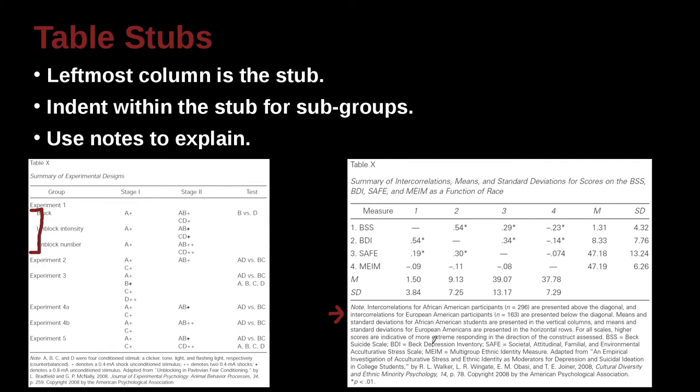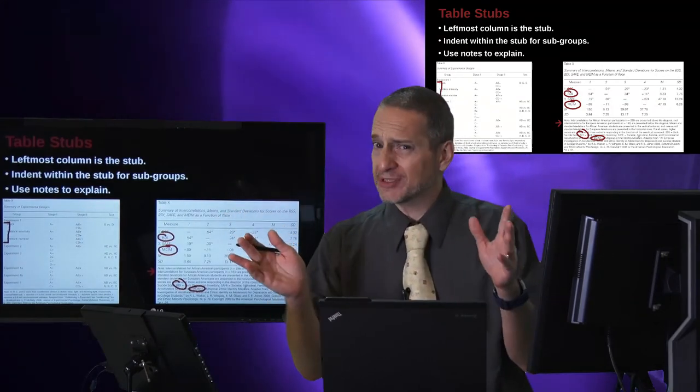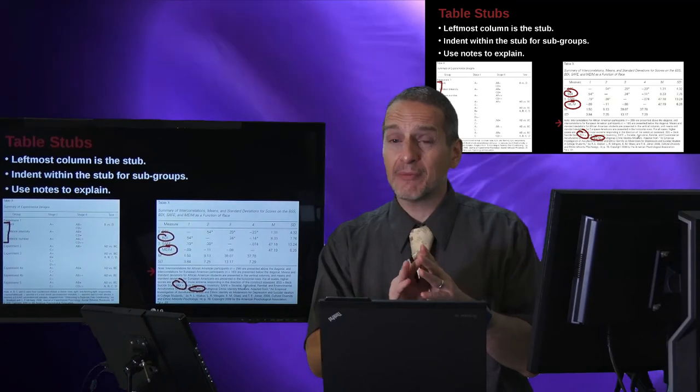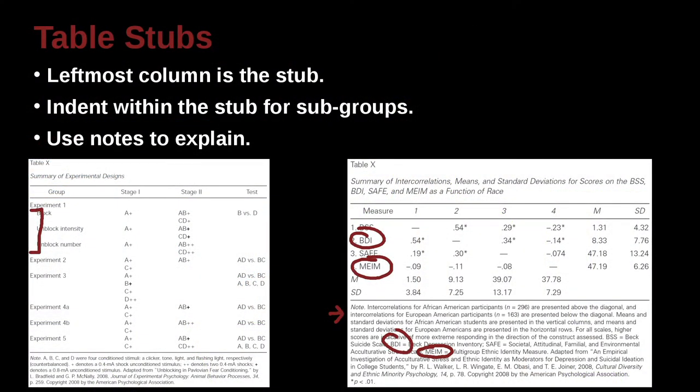One thing that this note is doing is you can see down in here like MEIM, and here is MEIM. And BDI, and here is BDI. So what's this doing? Well, BDI is Beck Depression Inventory. And MEIM is Multi-Group Ethnic Identity Measure. There's really some long, long phrases. So those are way too many words to put inside of a table, to put inside the stub. Remember, the stub has got to be short enough, and then you've got to have your numbers. So in this example, a really good example of use abbreviation. That's A-OK, but then you go and explain it in your note.